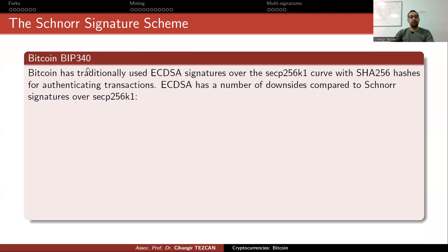So with Bitcoin BIP340, we had this update. Bitcoin has traditionally used ECDSA signatures over this elliptic curve with SHA-256 hashes for authenticating transactions. So this is what we talked about in the past. But elliptic curve digital signature algorithm has a number of downsides compared to Schnorr signatures over this elliptic curve, but also in any elliptic curve.